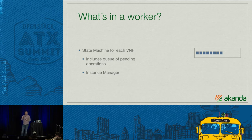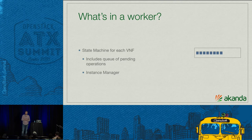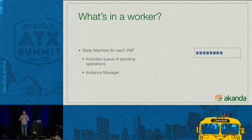Within a worker, we also have an instance manager. It's pluggable so you could have varying types of instances. Traditionally with Astara it's been service VMs, but you could switch it out. The instance manager talks with Nova — it's the interface where we abstract out how to boot and manage a VM.